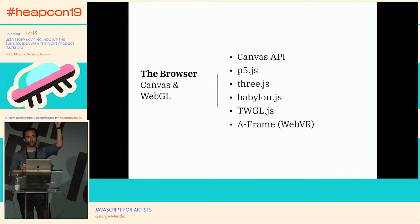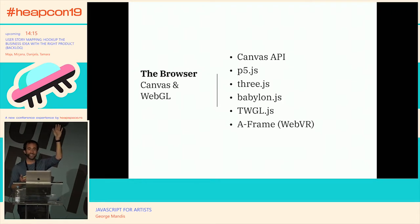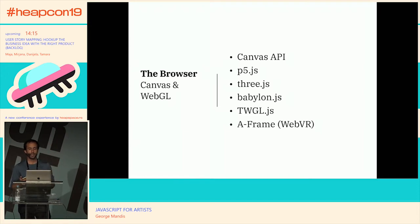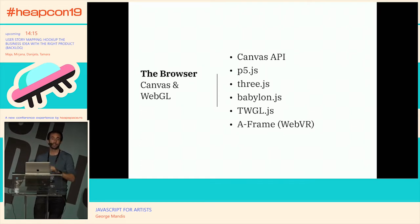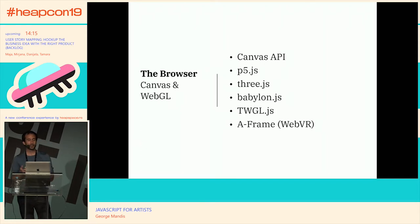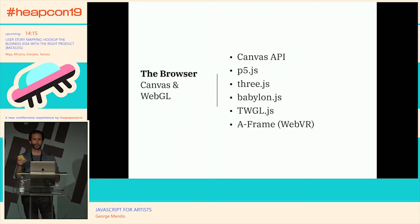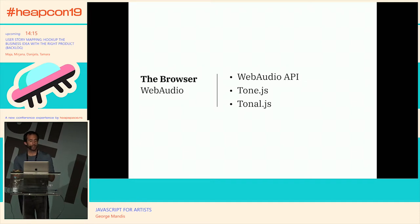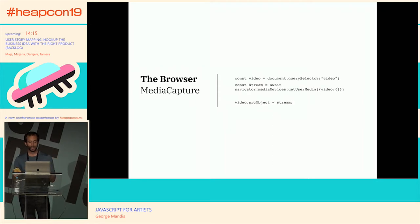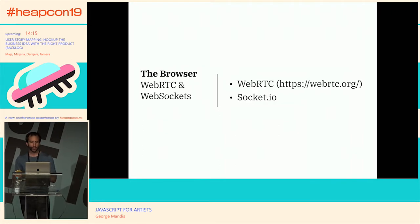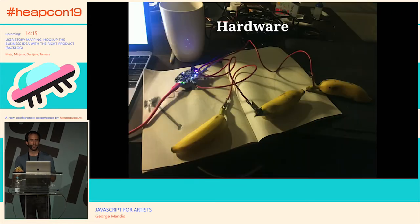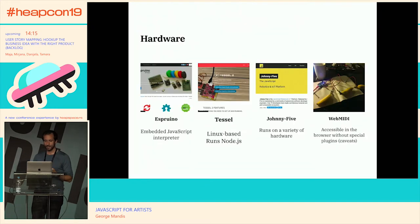If you take away nothing else from this talk, go home and play with p5.js. Who's familiar with Processing? It's kind of like Processing but for the browser — it's amazing. If you just want to make a circle that bounces around the screen and makes sounds when it hits the corners, you can whip that out really quickly in p5.js. For audio, Tone.js is a really great library for creating music and tones. And we have the Media Capture API for looking at and listening to our users.